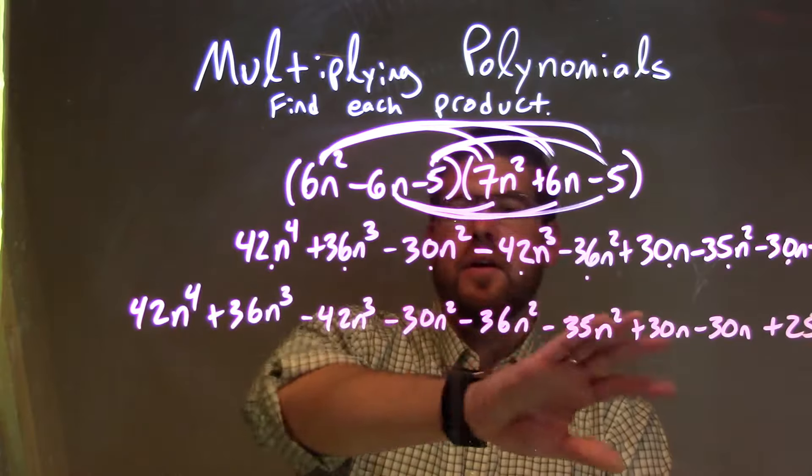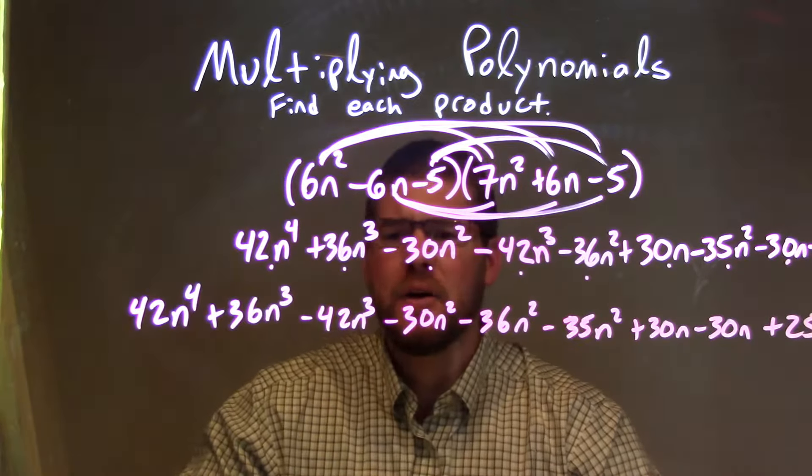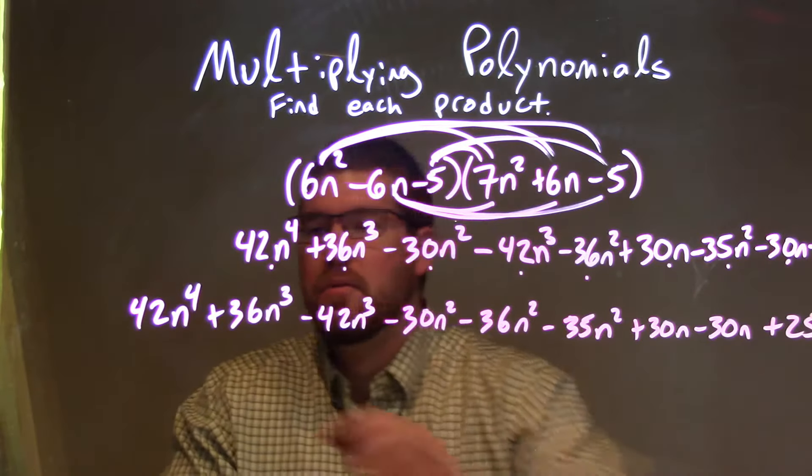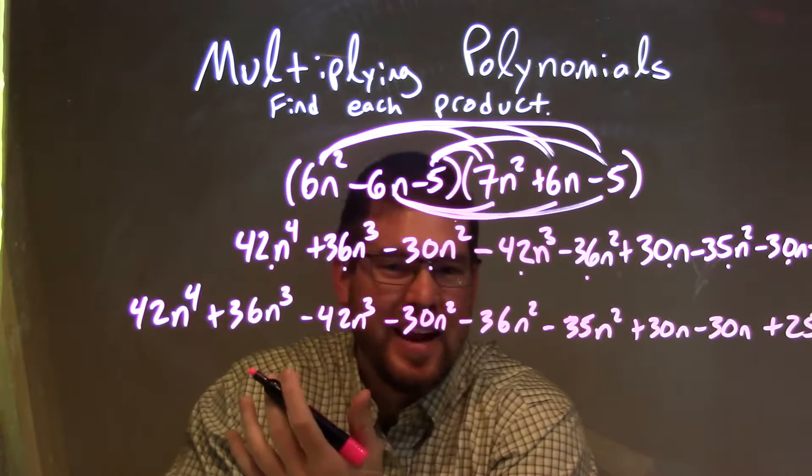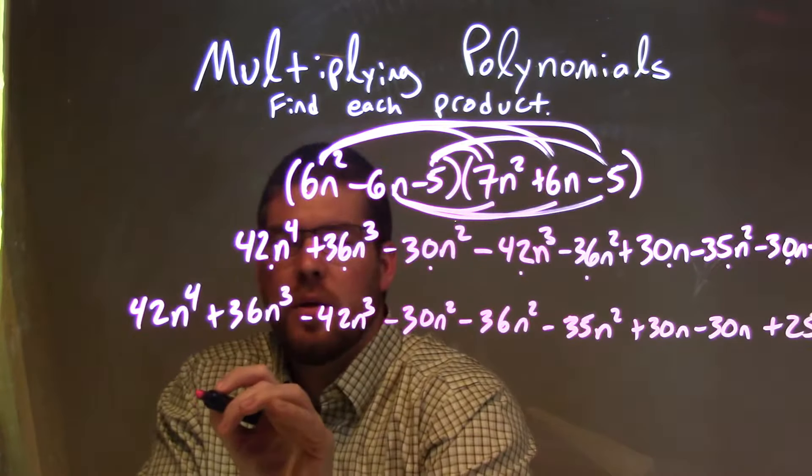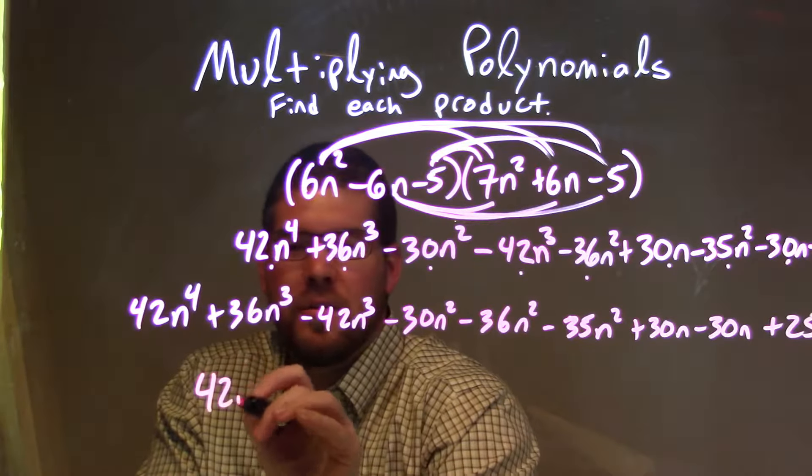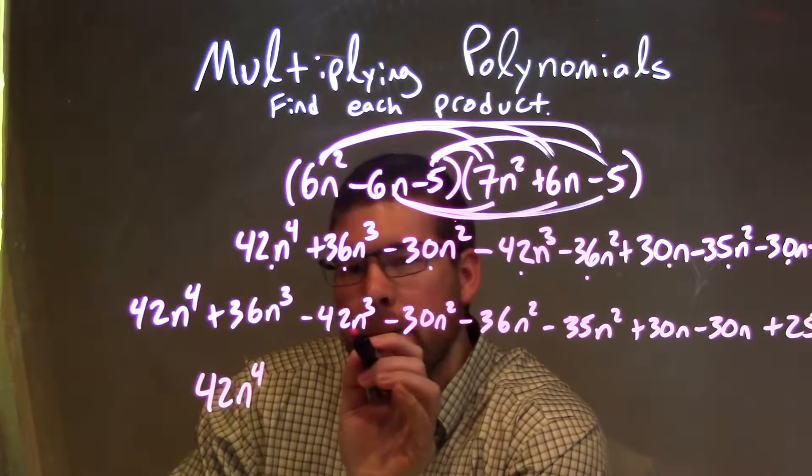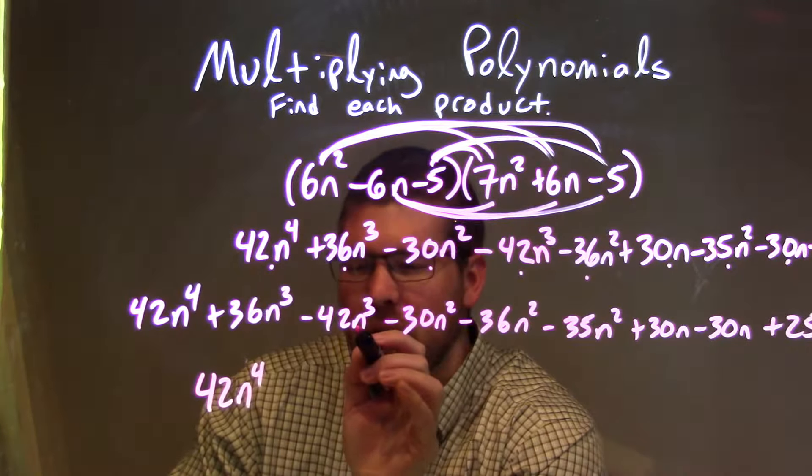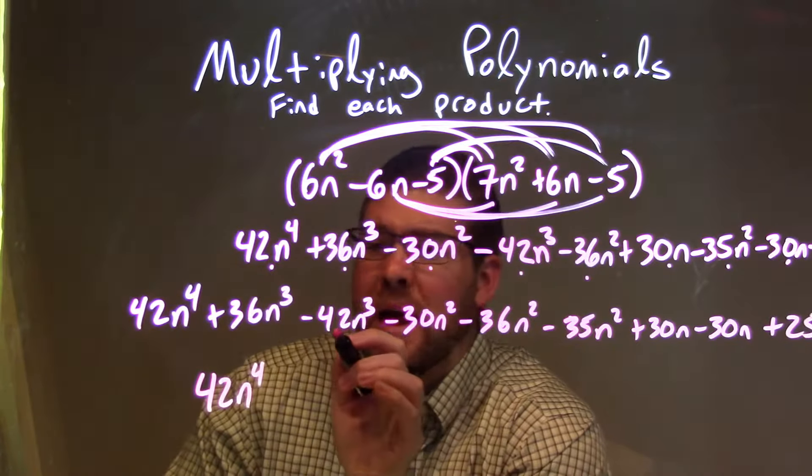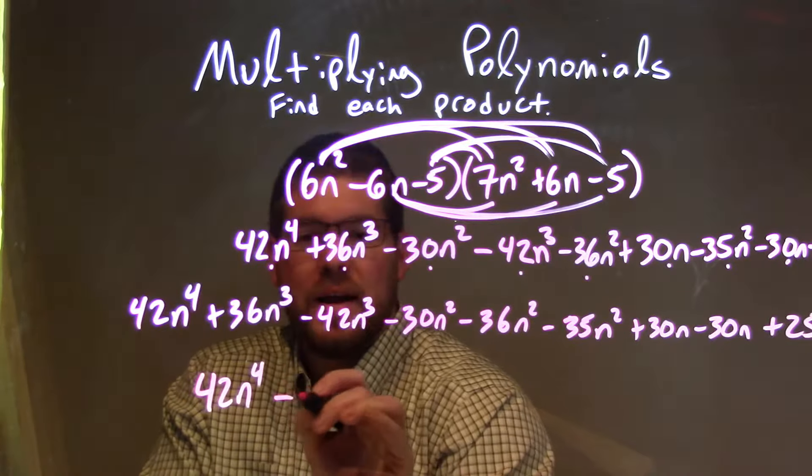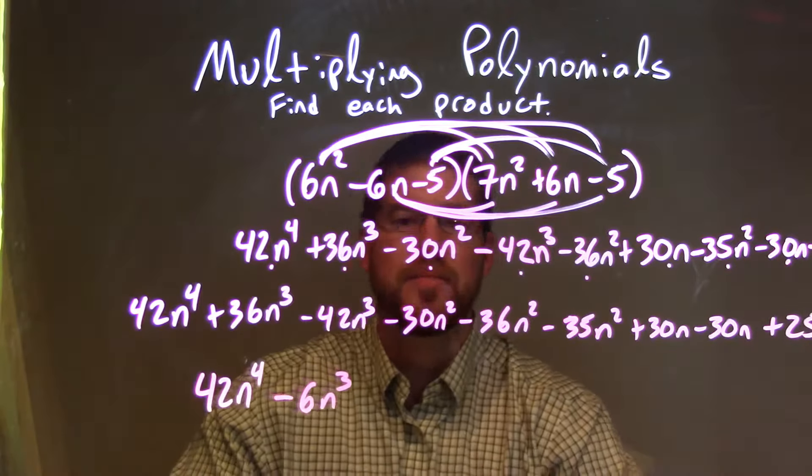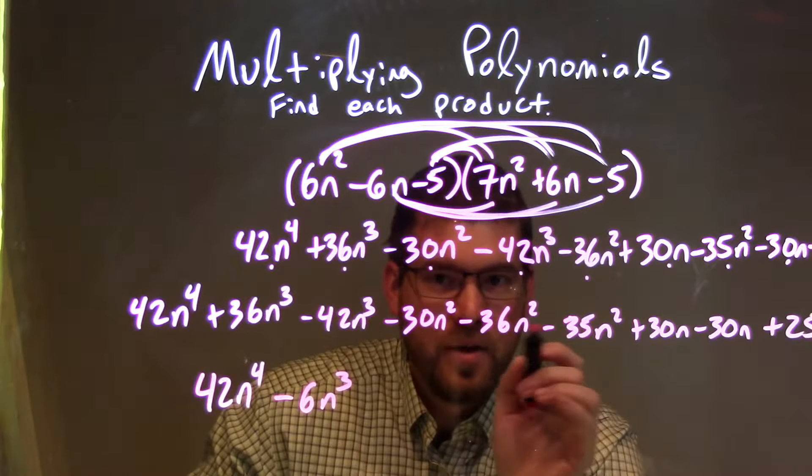So this is nice and big here, but all we need to do now is combine our like terms, and then we'll be done. First one here, 42n to the fourth power. I don't see anything else for the fourth power, so we can just rewrite it down here, 42n to the fourth. So now we have the third powers, 36n to the third minus 42n to the third. That comes out to be a minus 6. So we have minus 6n to the third.